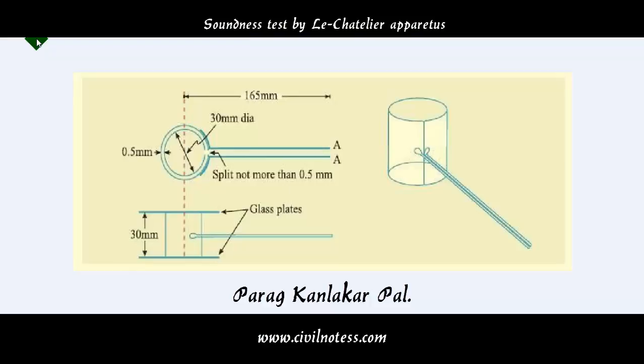For rapid hardening and low heat Portland cement, if the expansion is more than 10mm as tested above, the cement is said to be unsound. That is exactly the main procedure to do this soundness test by Le-Chatelier.